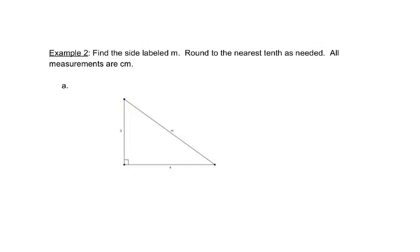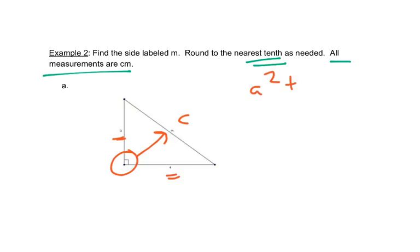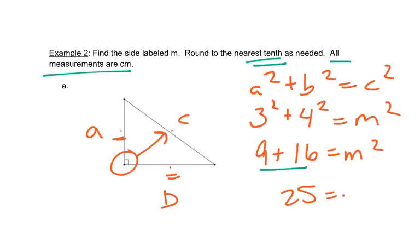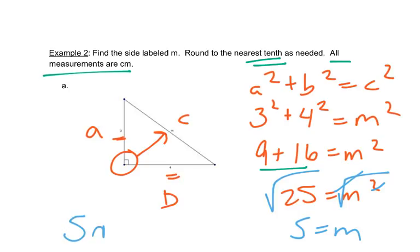We're looking at the next example, finding M in centimeters rounded to the nearest tenth. Here we have 3, here we have 4, and here's our right angle so the side across from it has to be our C. We write our formula: A squared plus B squared equals C squared. We'll call 3 A and 4 B, so 3 squared plus 4 squared equals M squared. 3 squared is 9, 4 squared is 16, and adding those together we get 25 equals M squared. Taking the square root of both sides, the square root of 25 is 5. So M is 5 centimeters.